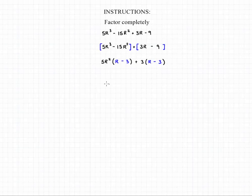Now because we have two terms multiplied by r - 3, we can combine them into a single set of parentheses and say that's the same thing as 5r² + 3 multiplied by the quantity r - 3. That's our final answer all factored out: (5r² + 3)(r - 3).